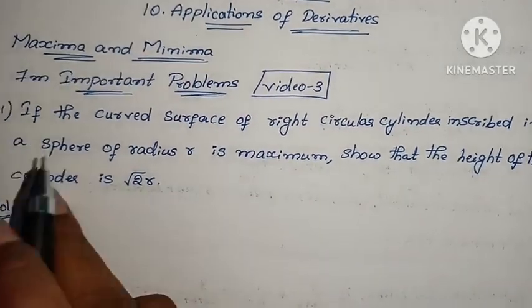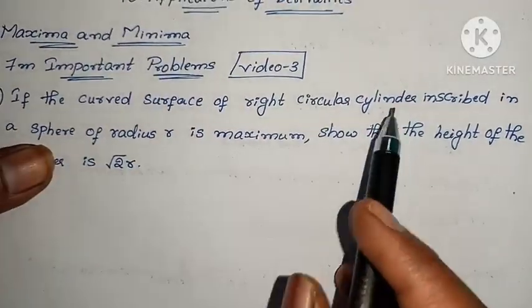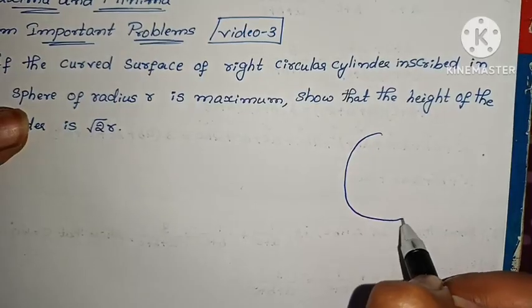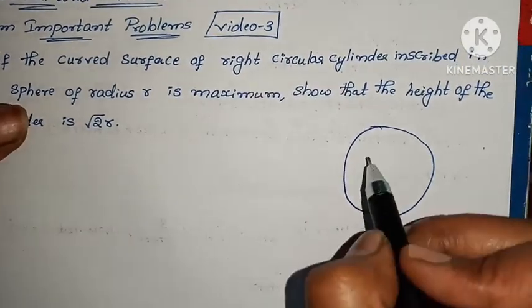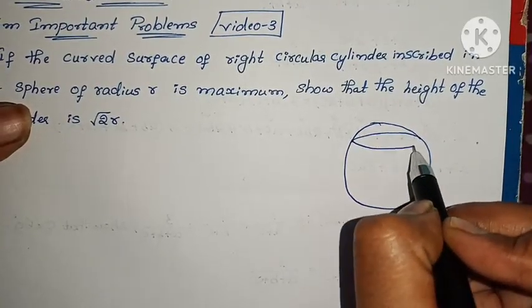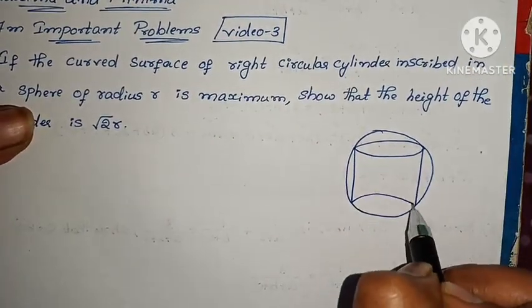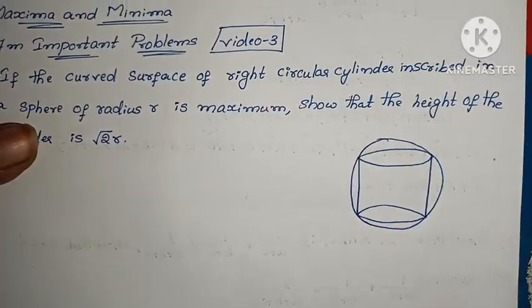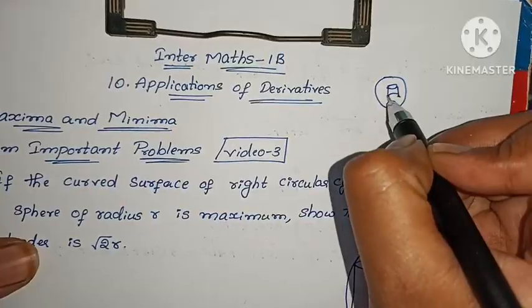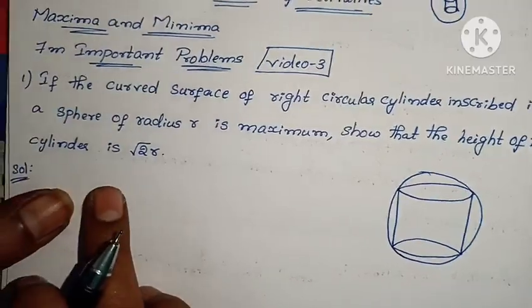The first question is: if the curved surface area of a right circular cylinder inscribed in a sphere of radius R is maximum, show that the height of the cylinder is root 2R. One cylinder is inscribed in the sphere of radius R.